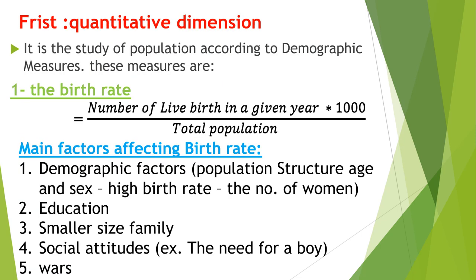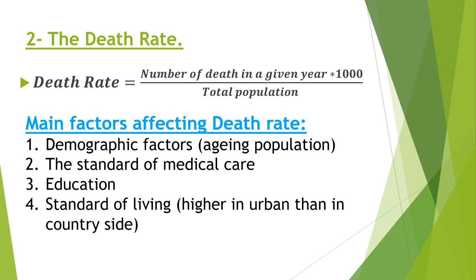The quantitative dimension is the study of population according to demographic measures. The first measure is the birth rate, calculated by the formula: the number of births in a given year divided by the total population times 1,000. The second is the death rate, calculated by the number of deaths in a given year divided by the total population times 1,000.